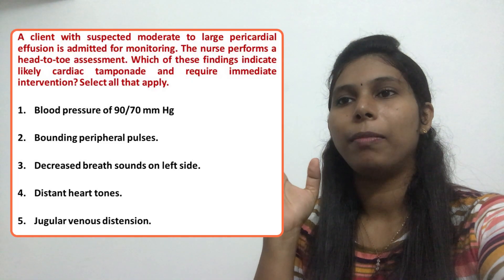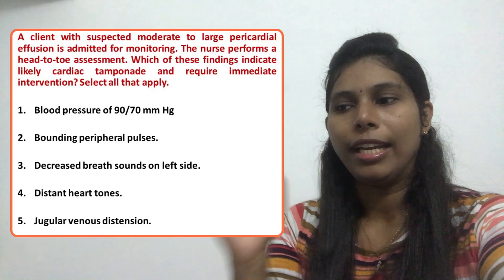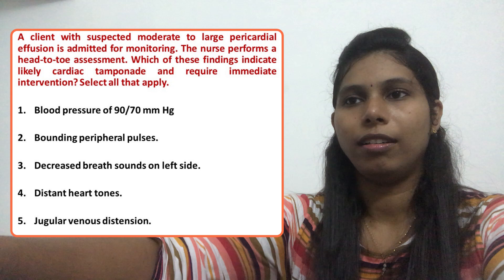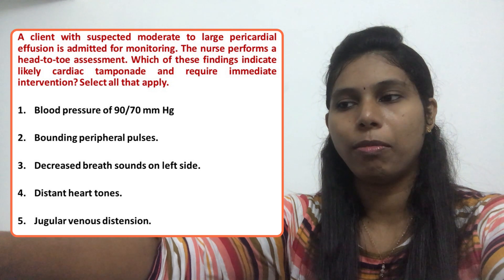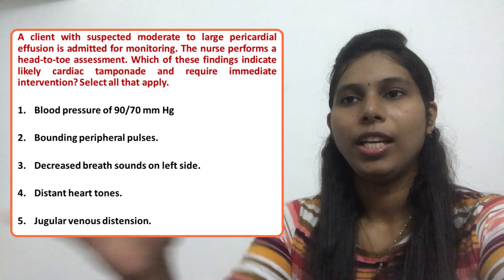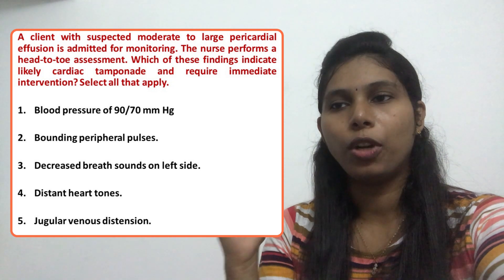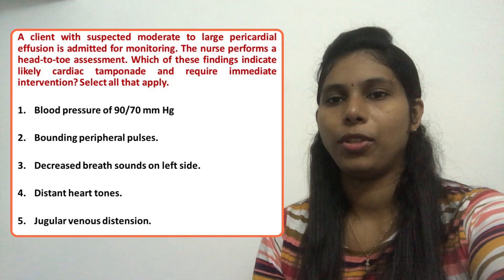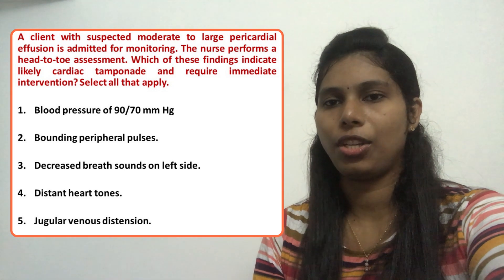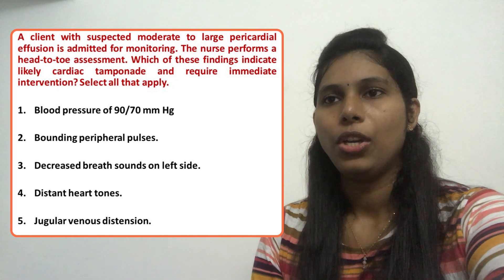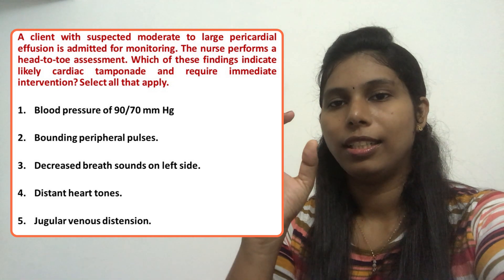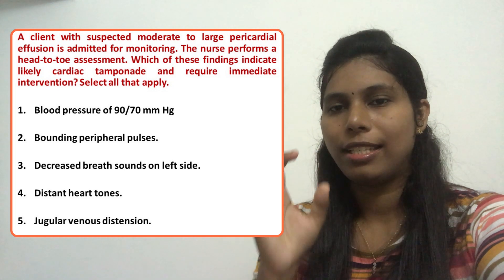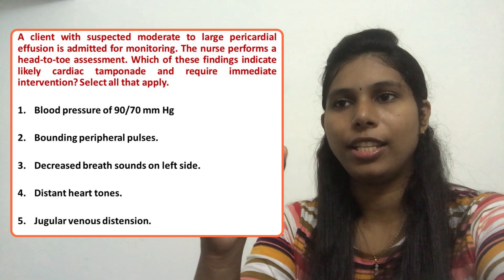So our answers are: option one — blood pressure of 90/70 mmHg; option four — distant heart tones; and option five — jugular venous distension. In this slide you can see why these are correct and the other symptoms we have already discussed.